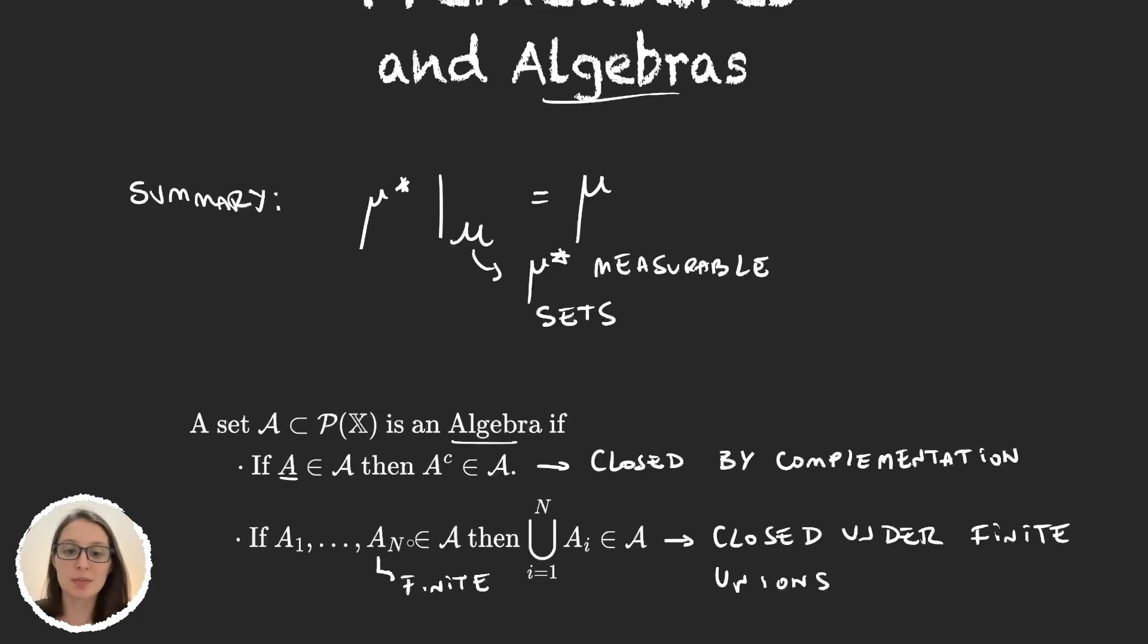So what this property says is that algebras are closed under finite unions. And this is the difference between algebras and σ-algebras. For σ-algebras, we were asking them to be closed under countable unions. Algebras are weaker in this sense. We only need finite unions to have an algebra. So they are therefore less powerful. And now that we know what an algebra is, we can finally define a premeasure.